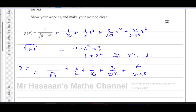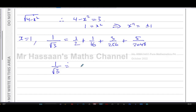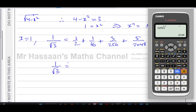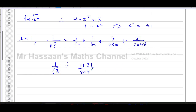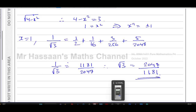Substituting x equals one into the right-hand side expansion, all the x terms become one. So we get a half plus one over 16 plus three over 256 plus five over 2048. Adding these fractions together with common denominator 2048 gives 1181 over 2048. So one over root three equals 1181 over 2048, and taking the reciprocal gives root three approximately equals 2048 over 1181.